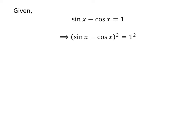Squaring both sides of the above equation gives us: square of sin of x minus cosine of x is equal to 1. As we know, square of a minus b is equal to square of a plus square of b minus 2 times a times b.